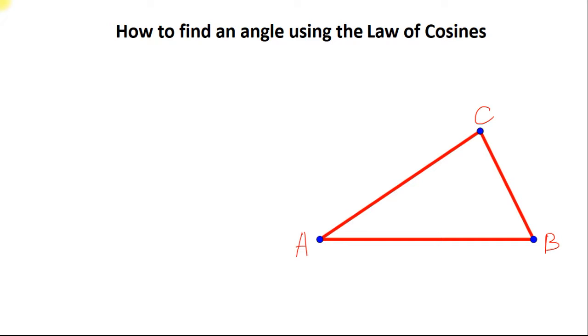Now we should label all the sides of the triangle. The side opposite to the angle A would be the side a, the side opposite to the angle B would be the side b and this side is going to be c because it's right opposite to the angle C.